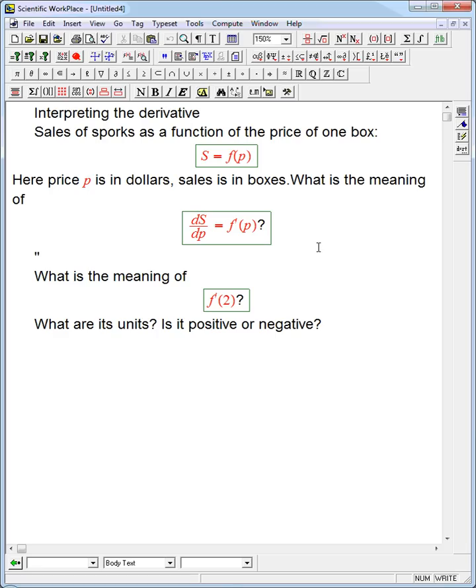The meaning of any derivative is the instantaneous, which means tangent line, not secant line, the instantaneous rate of change of whatever the output is, sales, with respect to whatever the input is, price.